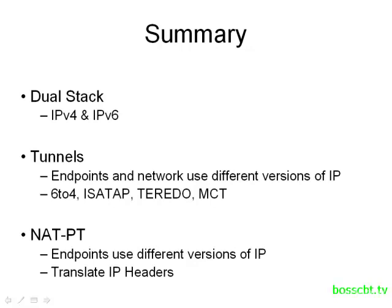To summarize: with the dual stack approach, every device on the network supports both IPv4 and IPv6 natively, running both at the same time, so if they receive a packet from either protocol they can handle it without a problem. If your devices cannot all support both protocols, you might want to set up tunneling — used when your endpoints cannot support the same protocol as the network. We looked at an instance where endpoints were running IPv6 but the network was IPv4, so we set up a tunnel and put IPv6 packets inside a v4 header to carry them across the v4 network.